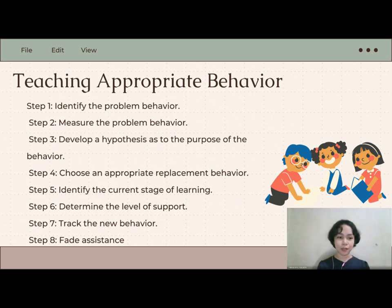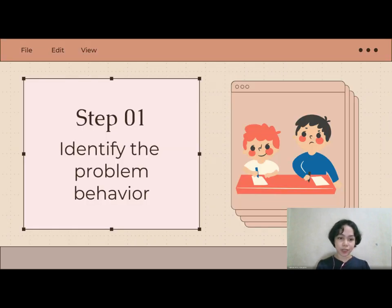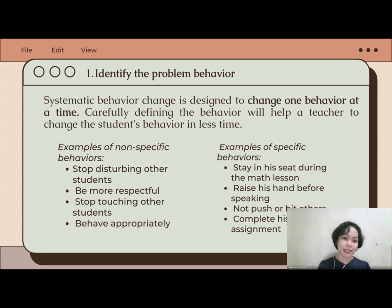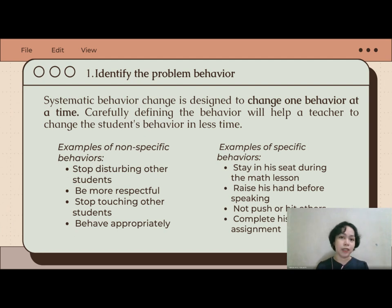First among the steps is to identify the problem behavior — this is the building block of this process. Before you implement your solution to a problem you have to first identify it. For example, you have a student John who wouldn't stop disturbing his classmates during class discussion and you wanted to change this behavior, but this is very general. You have to be as specific as possible.